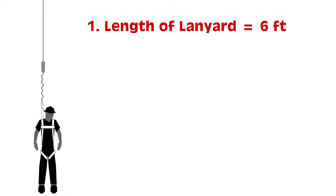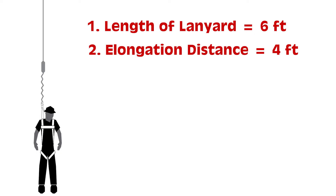The first thing we need to look at is the length of our lanyard. Most standard lanyards are six-foot shock-absorbing lanyards, so we'll have six feet to start. Secondly, we're going to look at the elongation distance — that's the stretch or elongation of the lanyard that we're using, and that is going to be four feet.